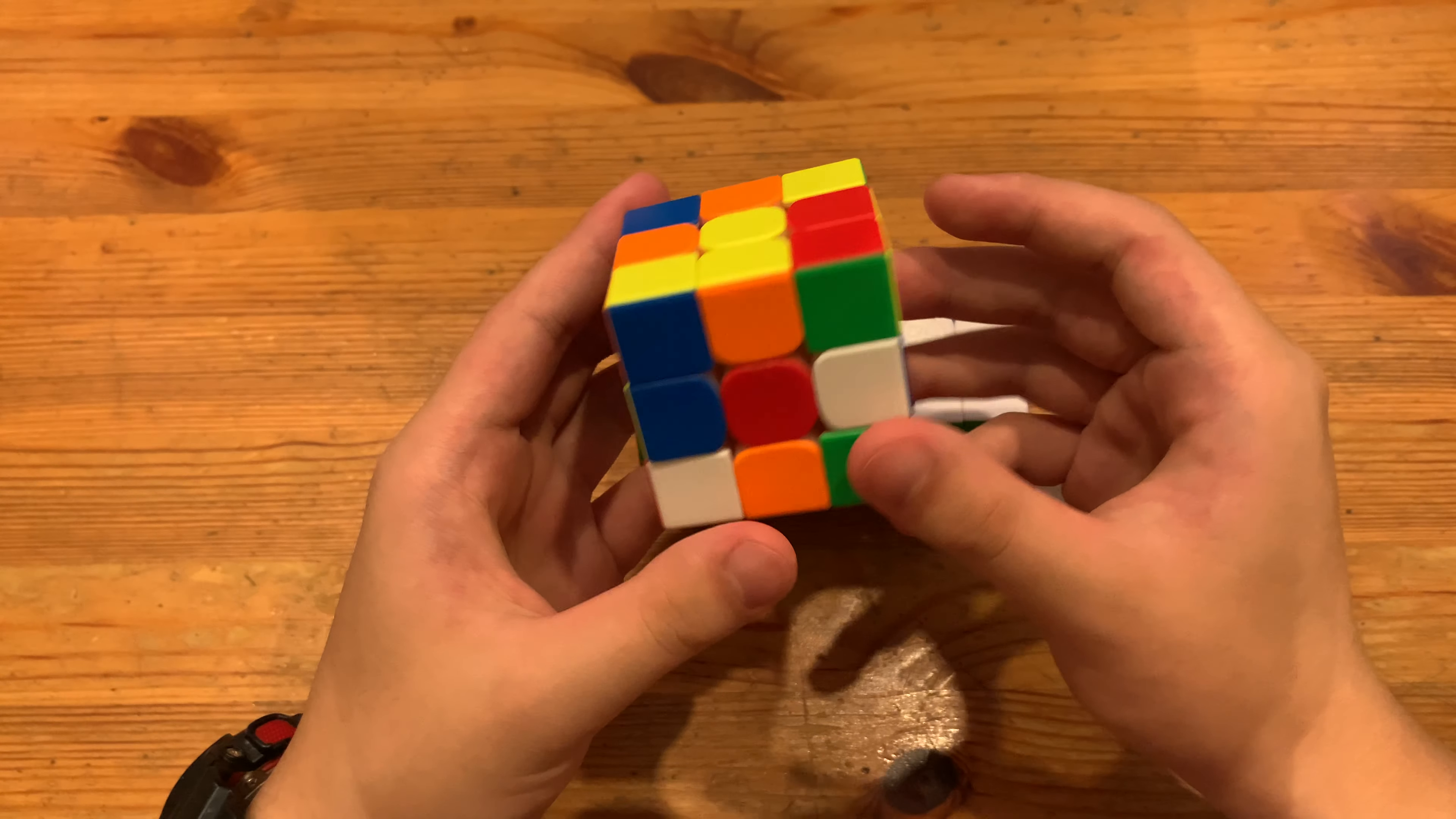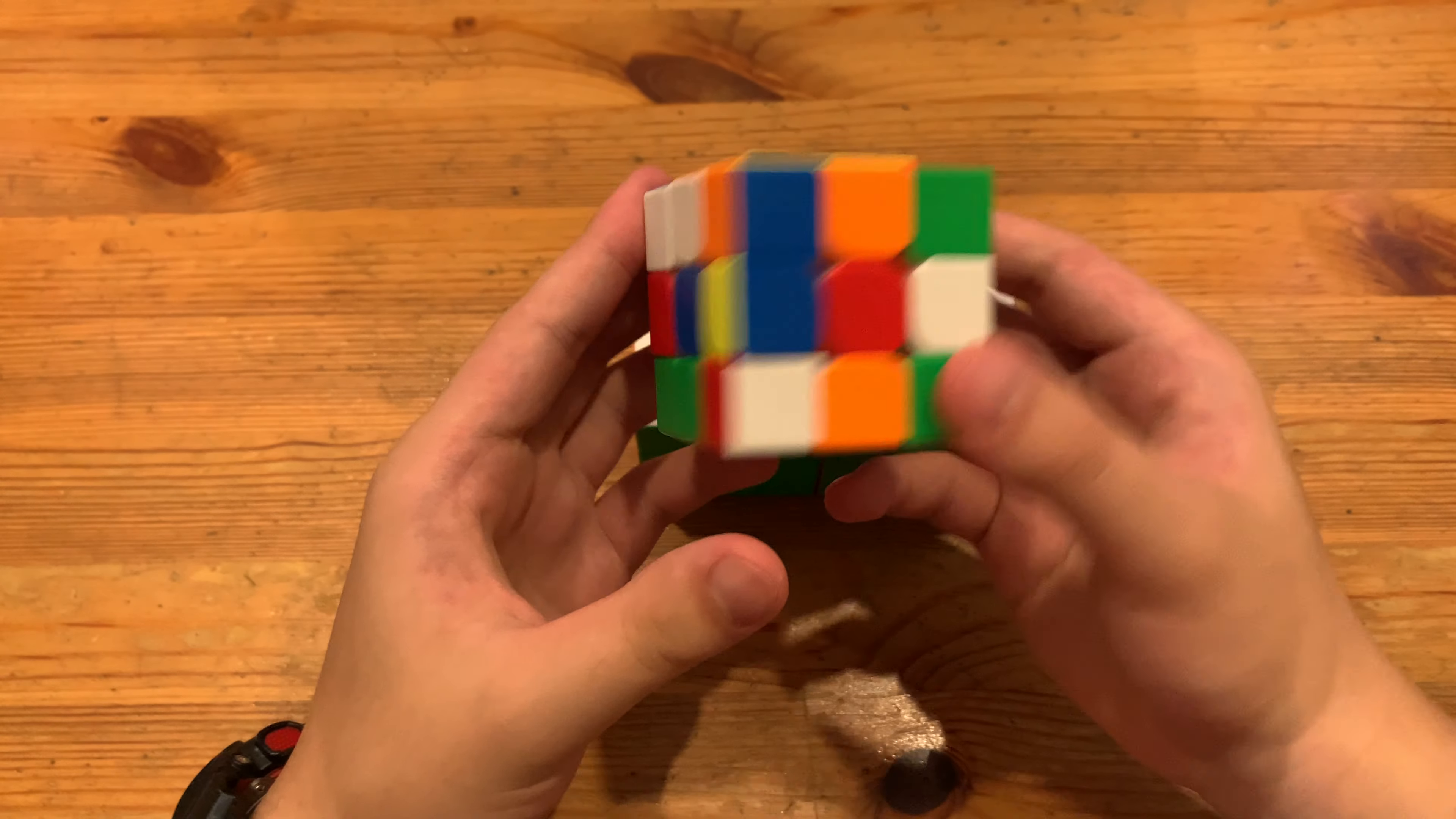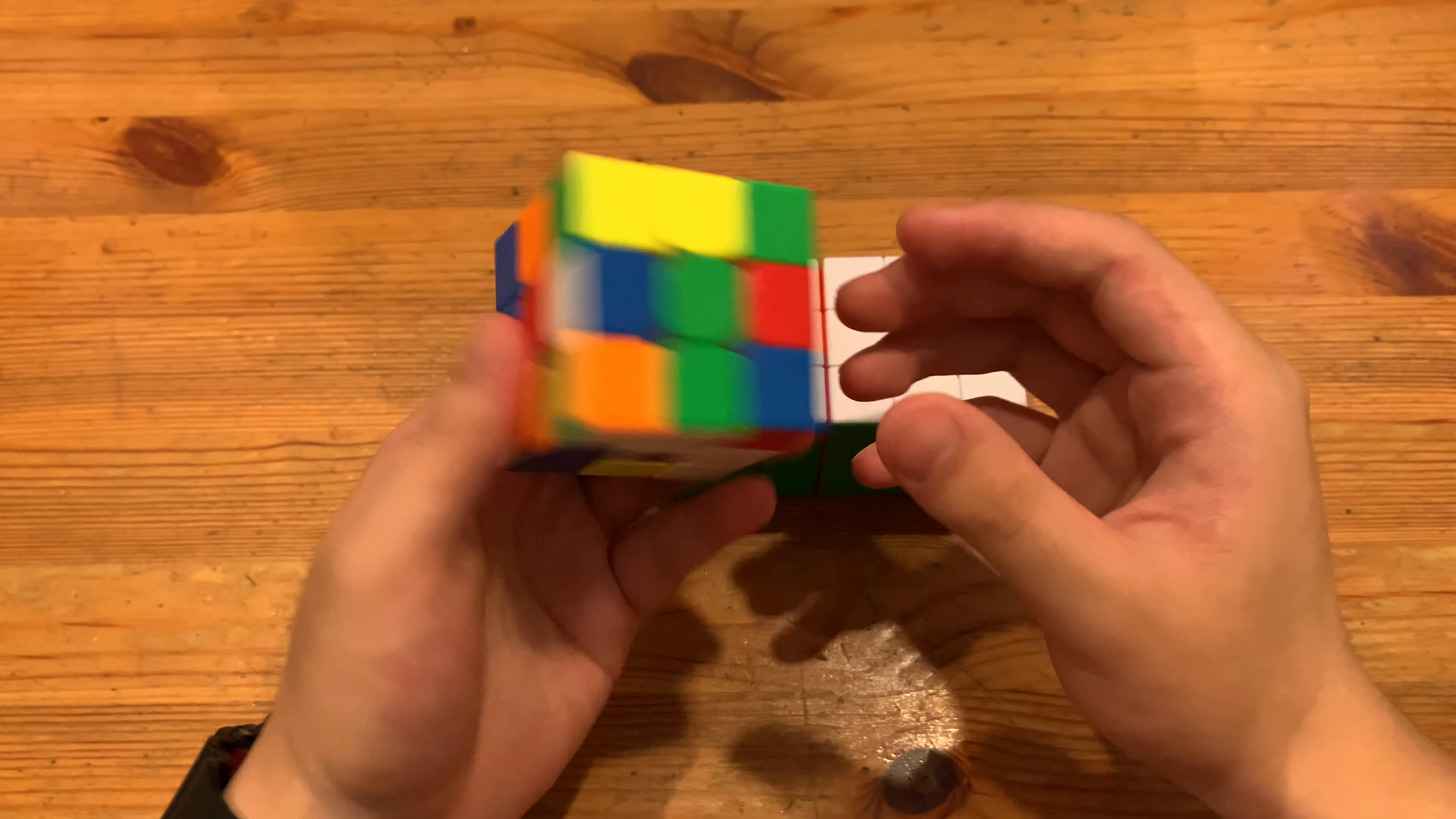Scramble number one looks pretty good. I can cancel into first pair pretty easily and second pair will also be easy.